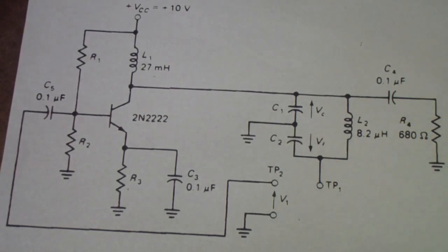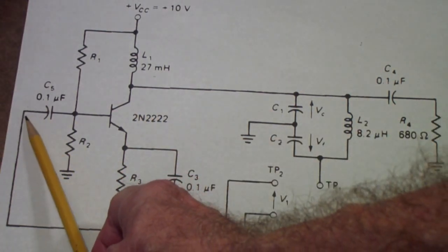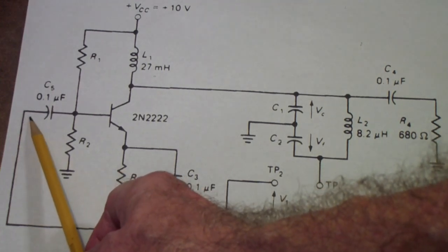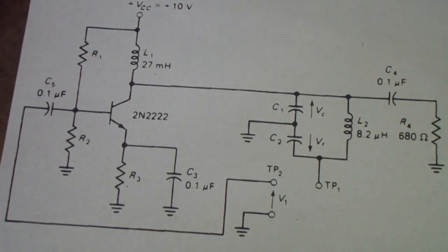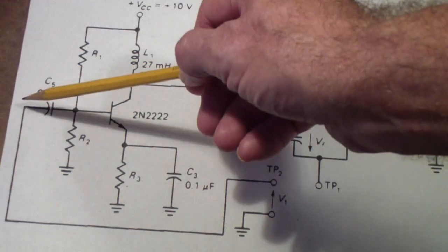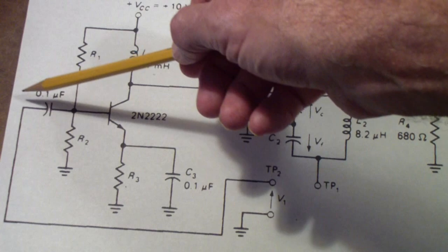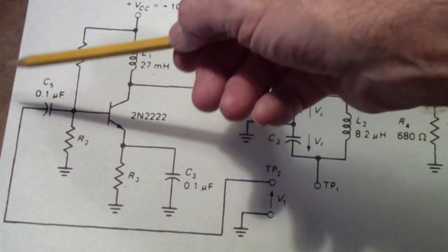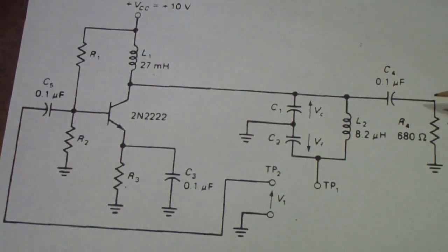The next thing we're going to do is use another feature of the analog discovery that's very useful in a case like this. It's called the network analyzer, and what we're going to be doing is we're going to sweep the frequency from about 1 megahertz to about 3 megahertz, while measuring the phase and amplitude response at this point. We don't have to make any changes to our connections, because we're using the wave generator and scope channel 1 at this point, and scope channel 2 at this point, which are the same connections you use for the network analyzer.